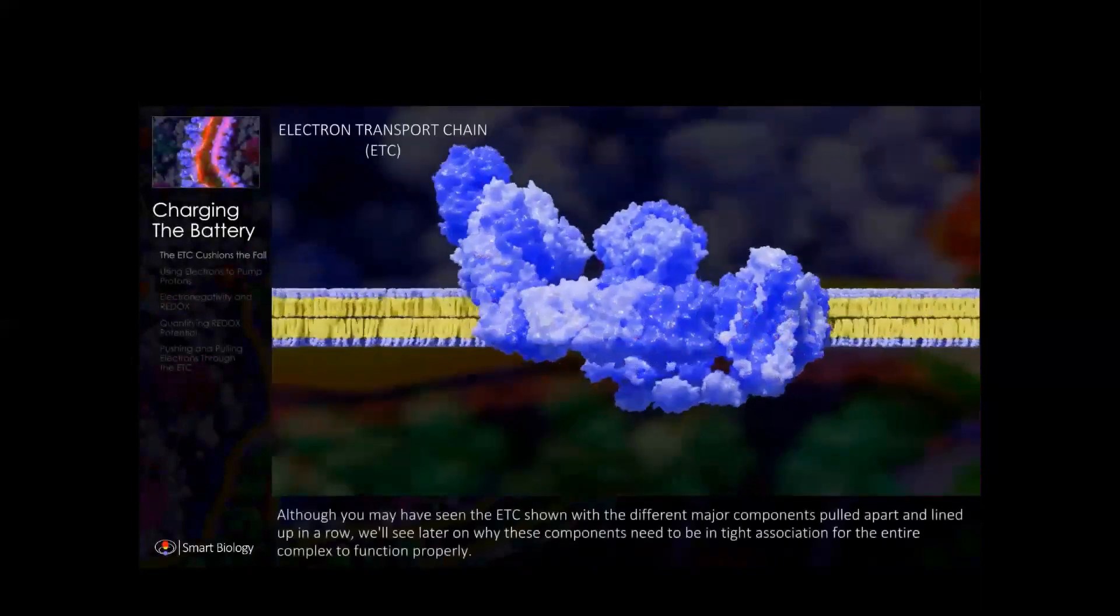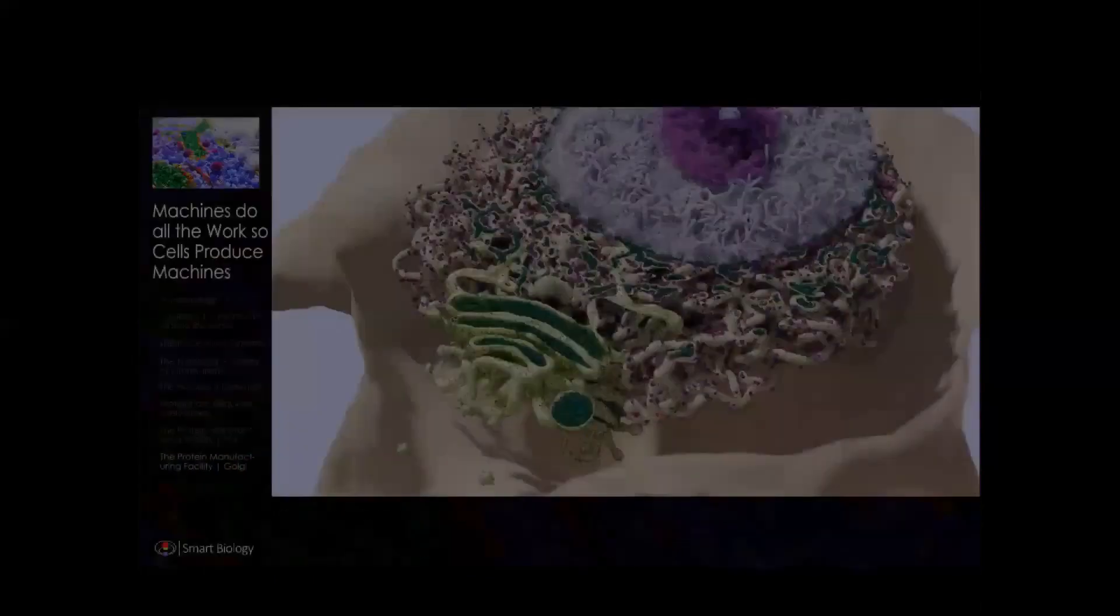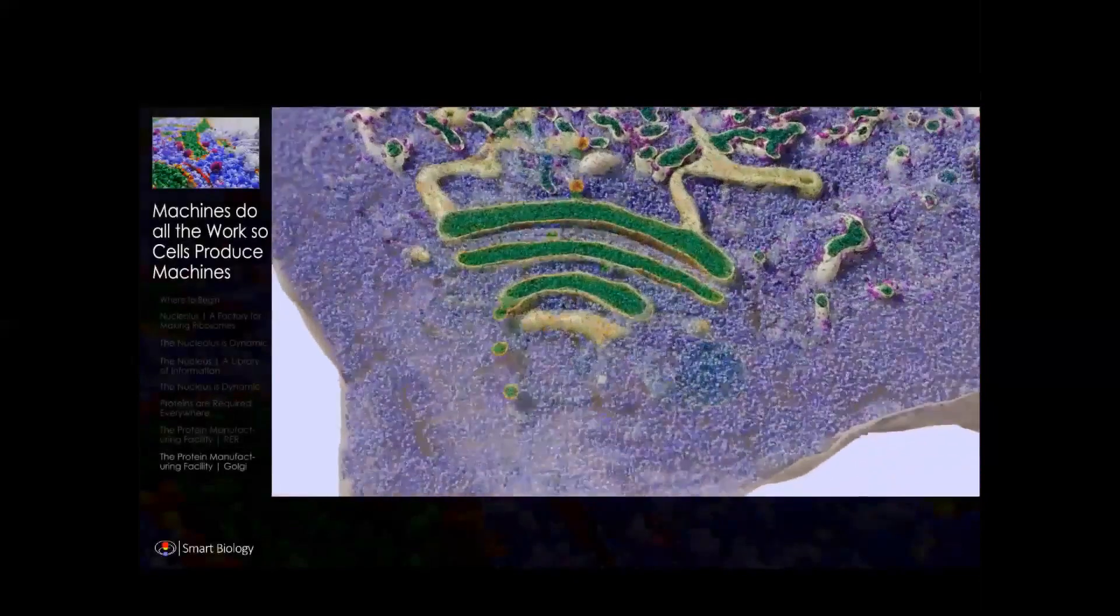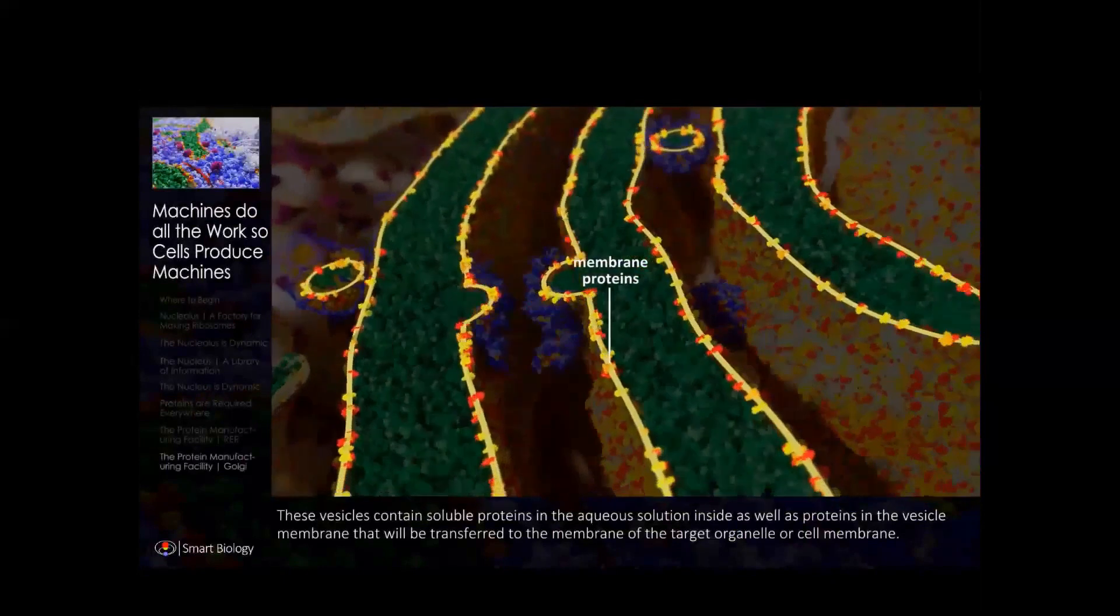We can even show organelles like the ER, the Golgi, with all of their macromolecules present. If we're going to show these bare organelles on their own, that's fine. Students at least need to first see everything in context so they can appreciate the scale of these events taking place.